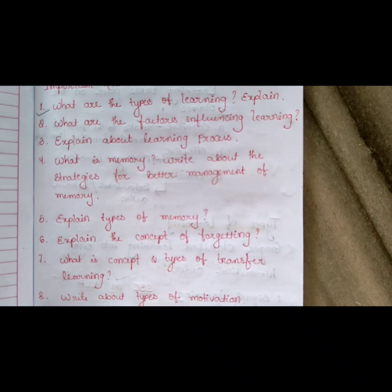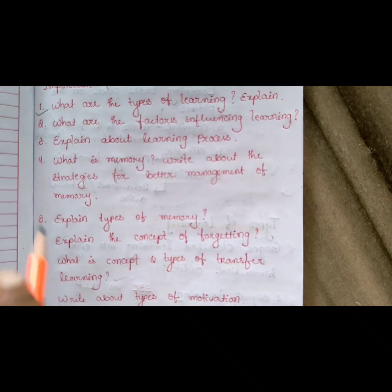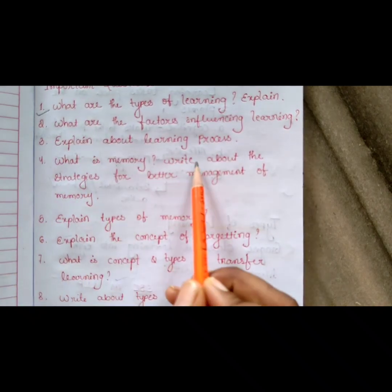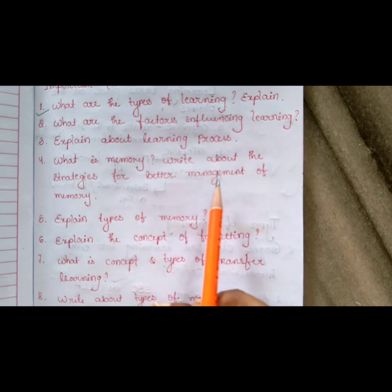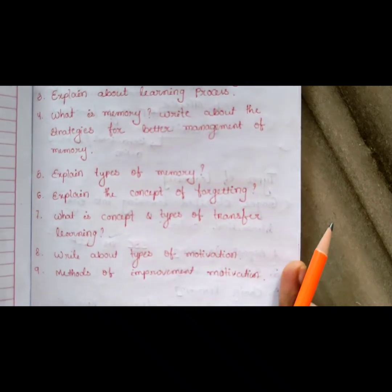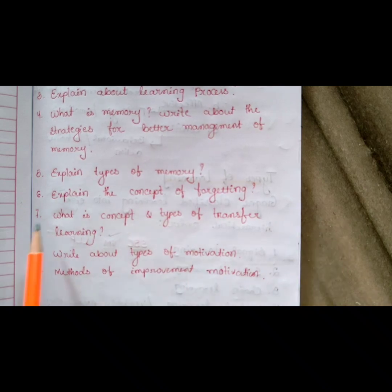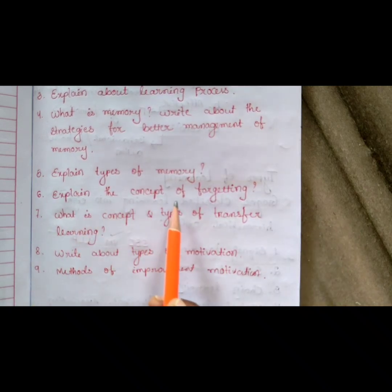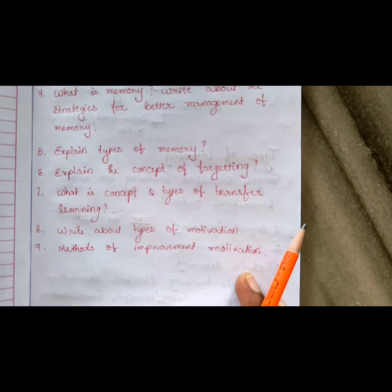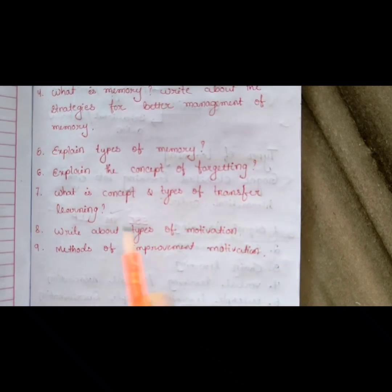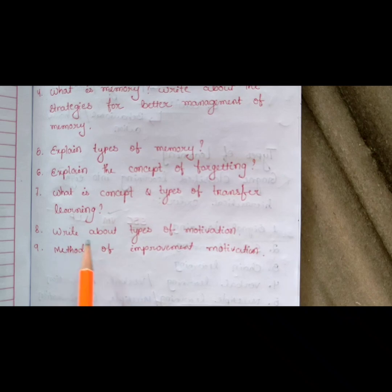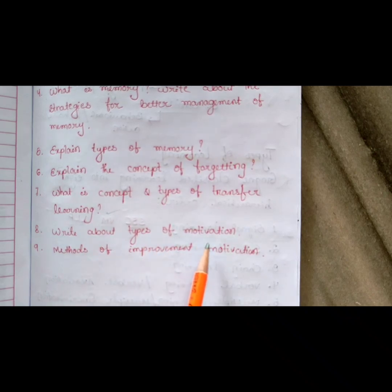Question three: explain about the learning process. Question four: what is memory — write about the strategies for better management of memory. Question five: explain types of memory. Question six: explain the concept of forgetting. Question seven: what is the concept and types of transfer of learning? Question eight: write about types of motivation.